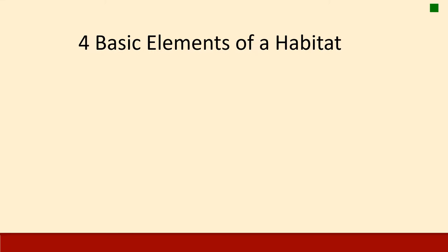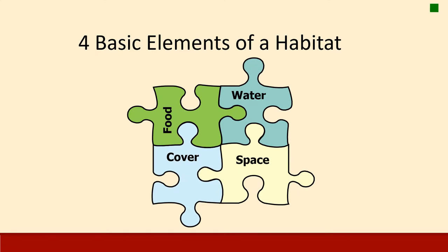When we talk about a habitat, there are four basic elements that are requirements for different populations. These requirements limit the size, growth, and quality of the animal population. These four elements are food, water, cover, and space.